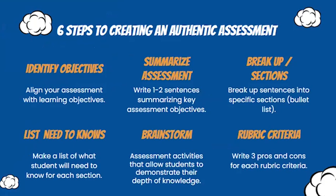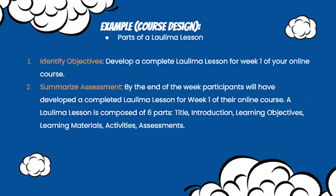It always starts with aligning to your learning objectives or outcomes for the course. Then move on to writing a few brainstorm sentences. From there, break those sentences into the main ideas into a bullet list. Then, what do students need to know for each of those bullet items to be successful? From there, brainstorm the type of authentic assessment activity you'd like them to do. And then develop a rubric. These six steps are just to get started — the examples shared by Anushka and Reina are very polished, but eventually you'll get to that point.